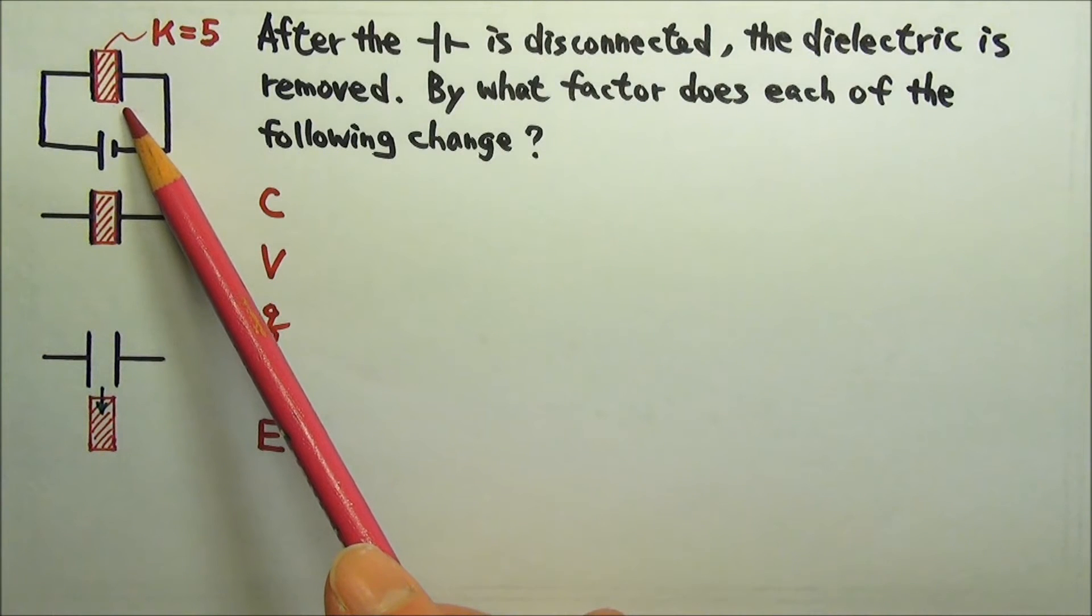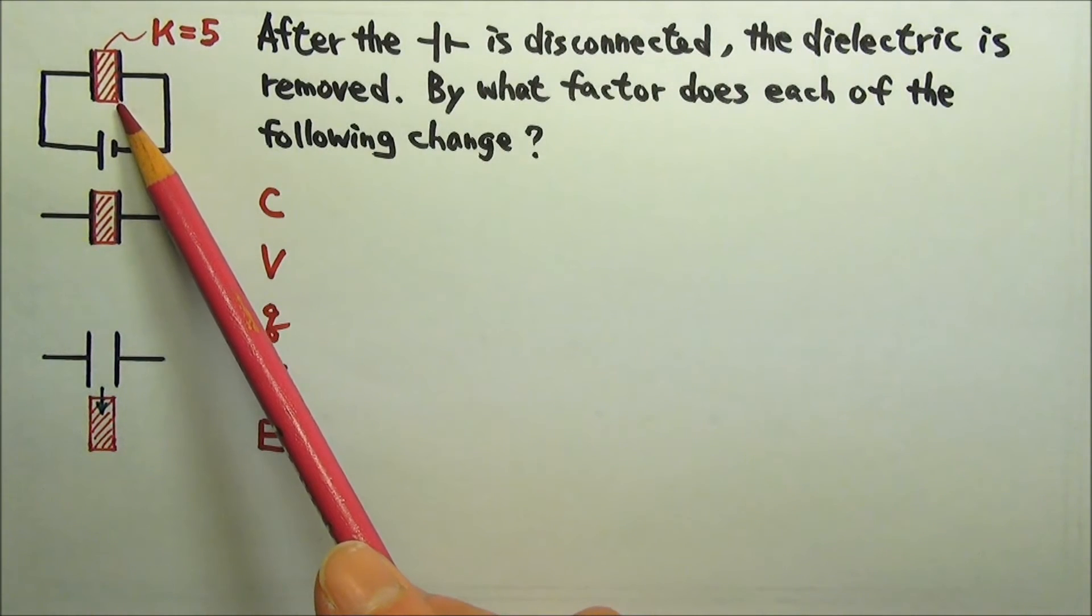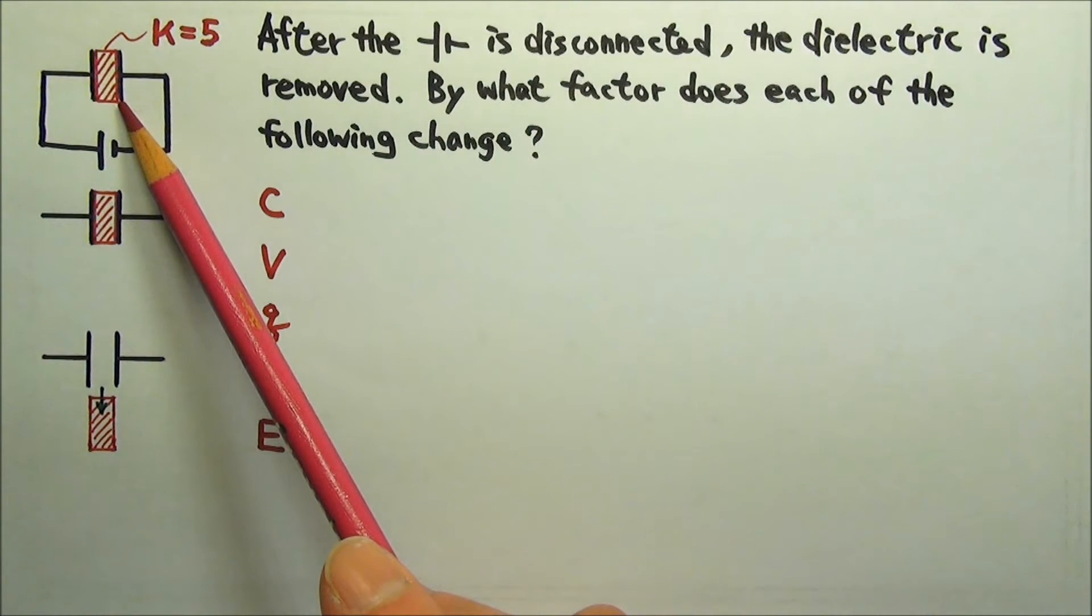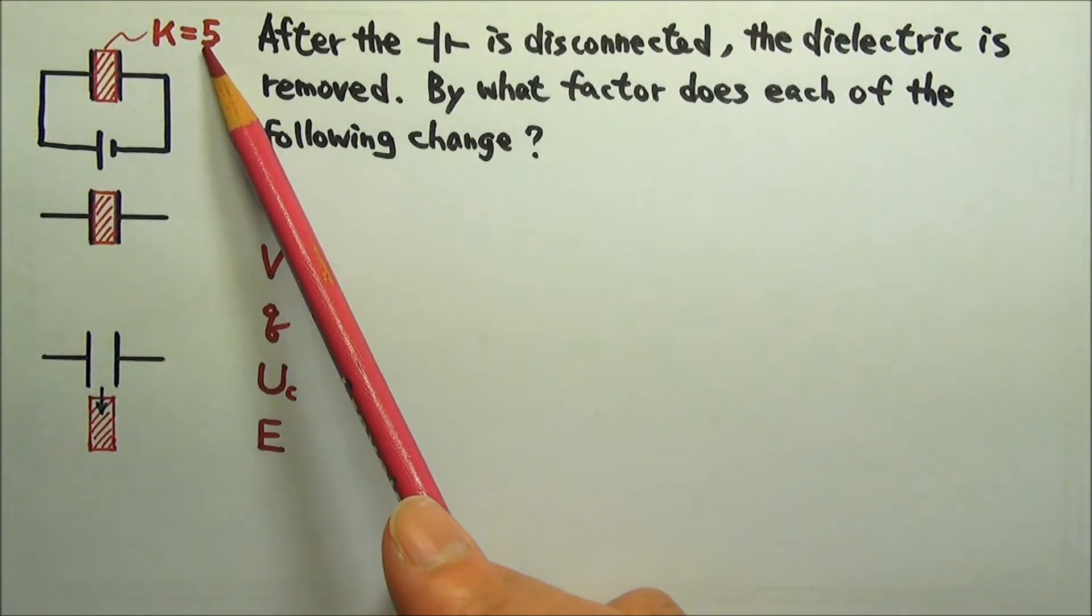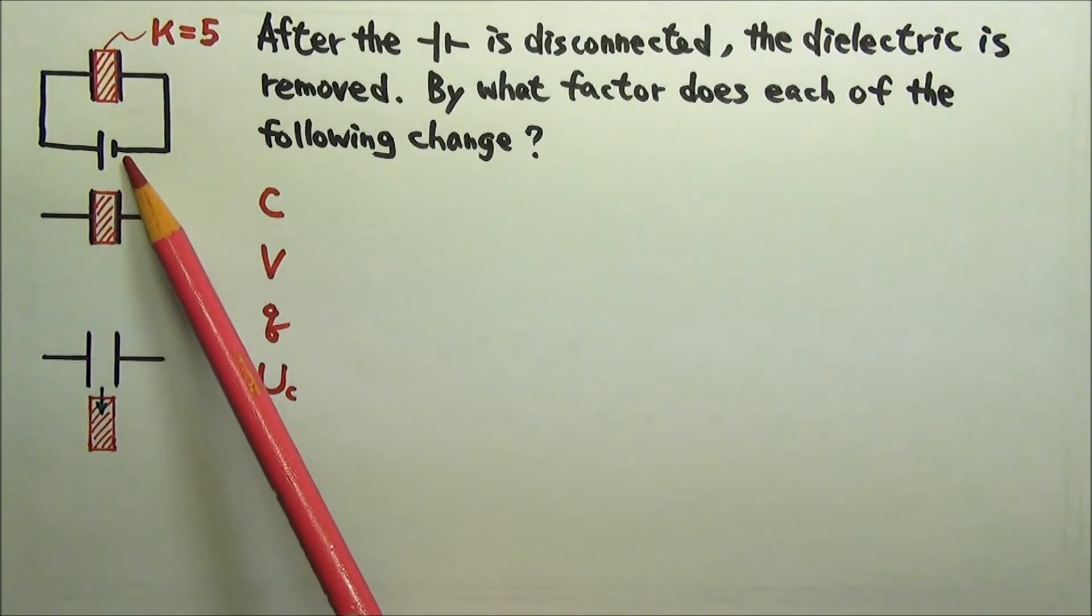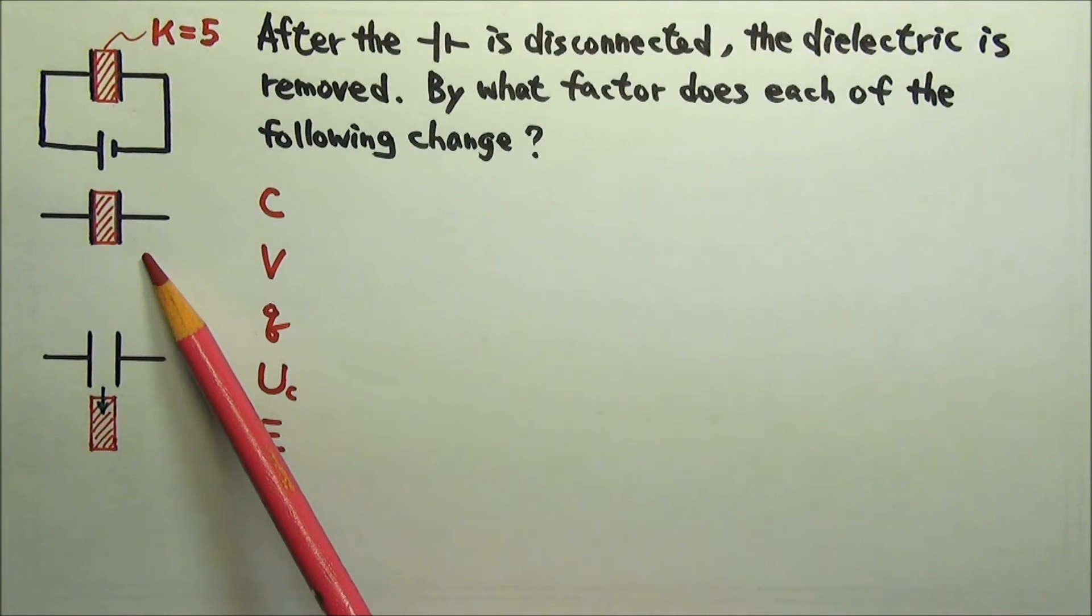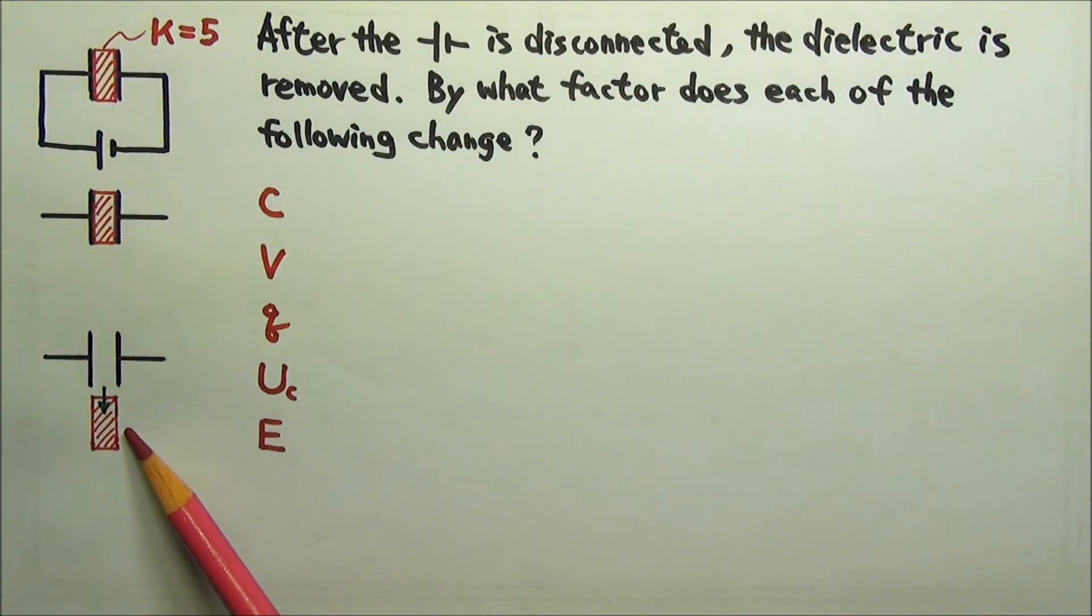A charged parallel plate capacitor is filled with a dielectric material between its plates. The dielectric constant of the material is 5. After the battery is disconnected, the dielectric material is removed.